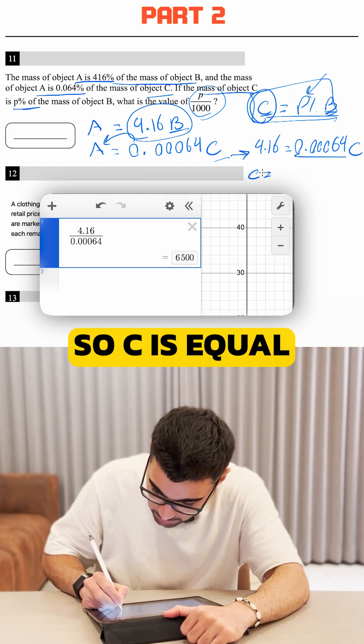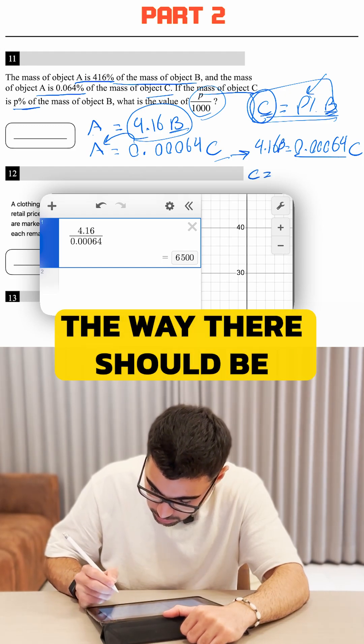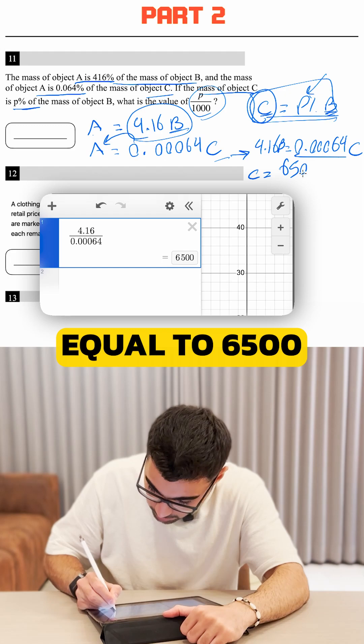That's going to give us 4.16 divided by 0.00064 gives us 6500. So C is equal to, this is B by the way, there should be a B here, C is equal to 6500B.